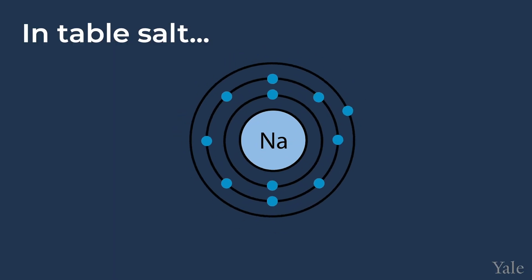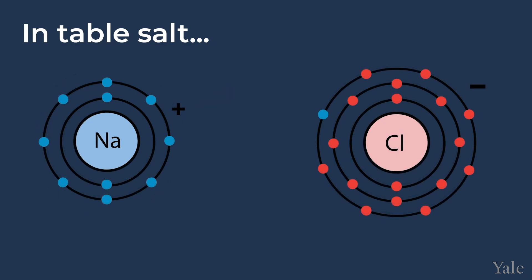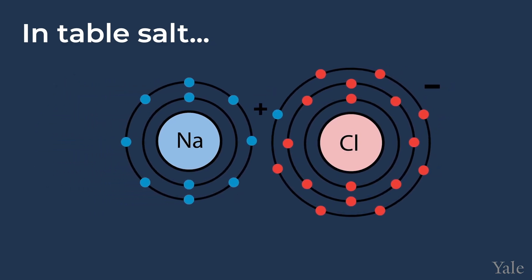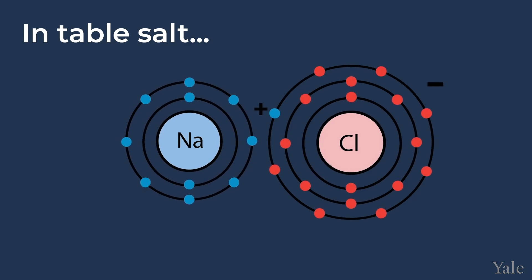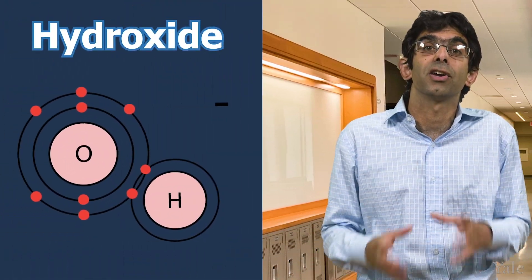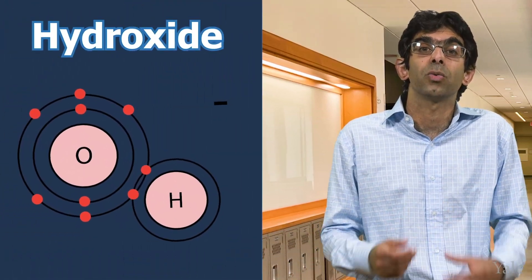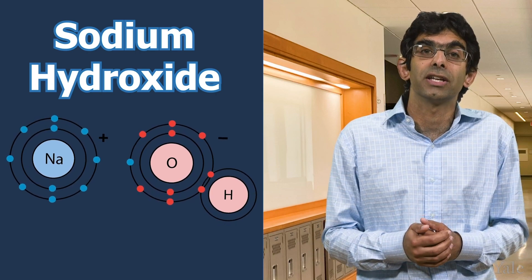In salt, the sodium is a positively charged cation, Na+, and the Cl is a negatively charged anion, Cl-. The compound is held together by the attractive forces between the positively charged Na+ and the negatively charged Cl-. It is also possible for molecules consisting of multiple atoms to have a positive or negative charge. For example, hydroxide, OH-, is a stable anion with a negative charge, and NaOH, sodium hydroxide, is a common ionic compound.